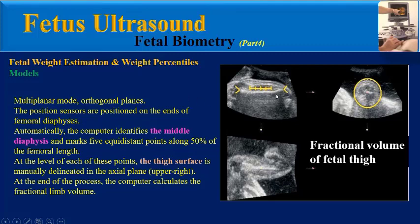The sensors are positioned on the ends of the femoral diaphysis. Automatically, the computer identifies the middle diaphysis and marks five equidistant points along 50% of the femoral length. At the level of each of these points, the thigh surface is manually delineated in the axial plane. At the end of the process, a computer calculates the fractional limb volume.